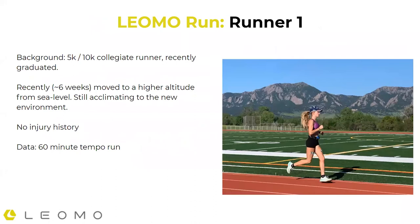Here's runner number one. She is a 5K/10K collegiate runner who recently graduated and has fairly recently moved to Boulder at higher altitude — about 5,600 feet, roughly 1,700 to 1,800 meters. She's still acclimating to the new environment and has no injury history. The data from all of these runners is going to be from a 60-minute tempo run.